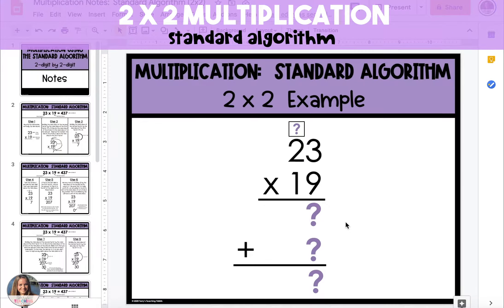In this example, we're going to multiply a two-digit number, 23, by another two-digit number, 19.